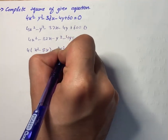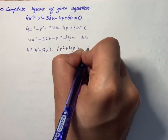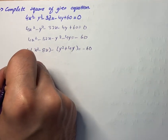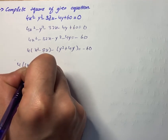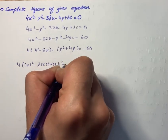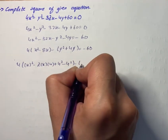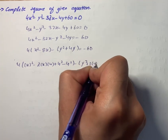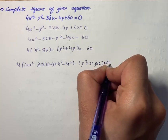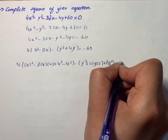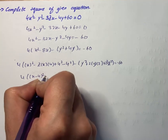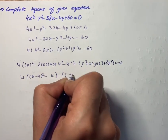Now we complete the square: 4[(x² − 2·x·4 + 4²) − 4²] − [(y² + 2·y·2 + 2²) − 2²] = −60. On simplification we have 4[(x−4)² − 16] − [(y+2)² − 4] = −60.